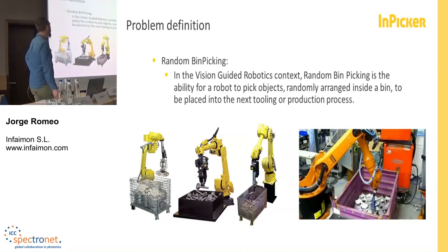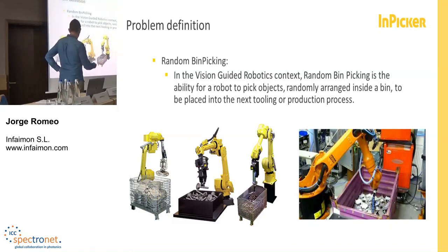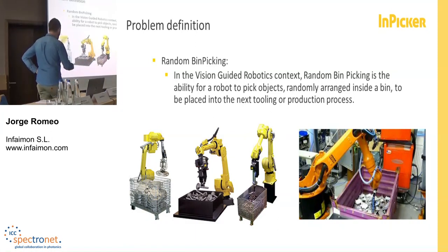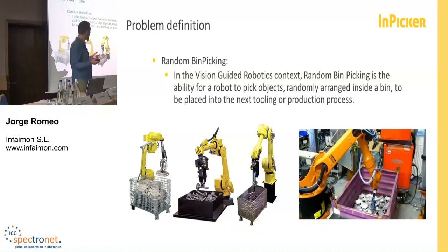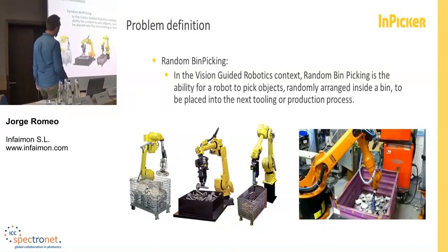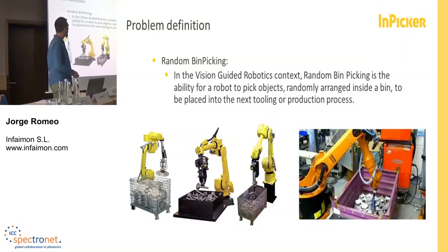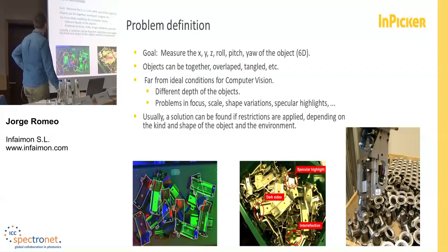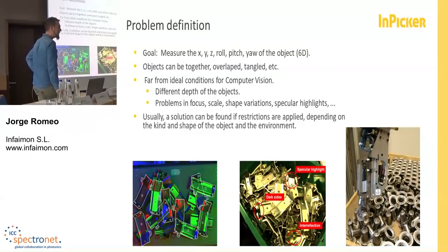The first definition. In the vision-guided robotics context, random bin picking is the ability for a robot to pick objects. These objects are randomly distributed in a container with no restriction in their pose, in their translation, or in the rotation. The objective is to place the objects in the next machine, or tooling. The goal is to measure XYZ, roll, pitch, yaw of the object with six degrees of freedom. We have no restriction in the pose.